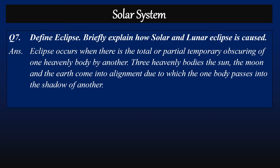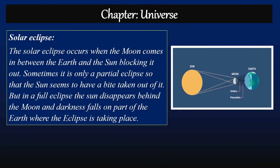Due to this alignment, one body passes into the shadow of another. A solar eclipse occurs when the moon comes in between the earth and the sun, blocking it out. Sometimes it is only a partial eclipse so that the sun seems to have a bite taken out of it, but in a full eclipse the sun disappears behind the moon and darkness falls on part of the earth where the eclipse is taking place.